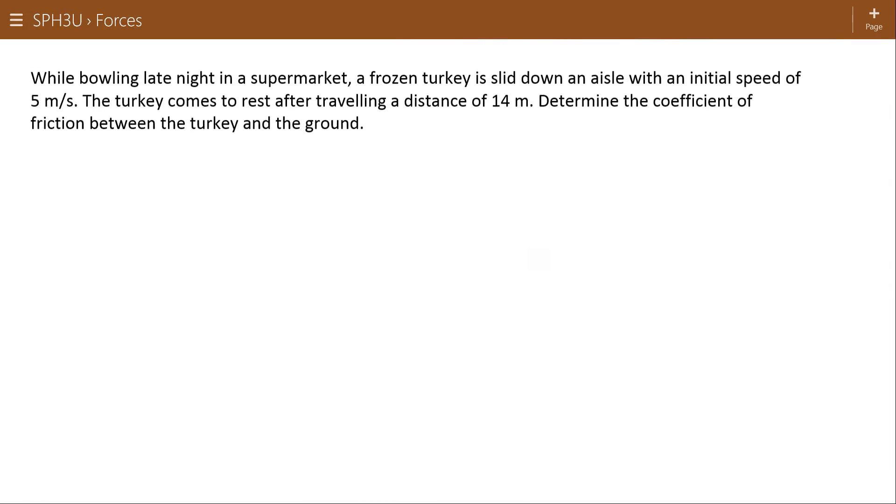While bowling late night in the supermarket, a frozen turkey has slid down an aisle with an initial speed of 5 meters per second. V1 equals 5 meters per second. The turkey comes to rest. V2 equals 0. Traveling a distance of 14 meters. Determine the coefficient of friction between the turkey and the ground.